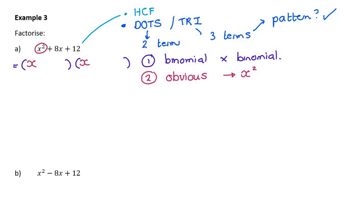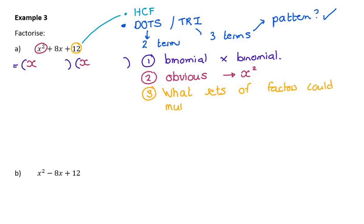My second step is to look for what's obvious. Which one of these terms is very obvious where it comes from? It's very obvious where x squared comes from, because x squared can only possibly come from x times x. So immediately I fill in what's obvious. My third step is to look at the sets of factors that could multiply together to give me 12. We don't look at the middle term, because the middle term doesn't come directly from a product — it comes from adding like terms.